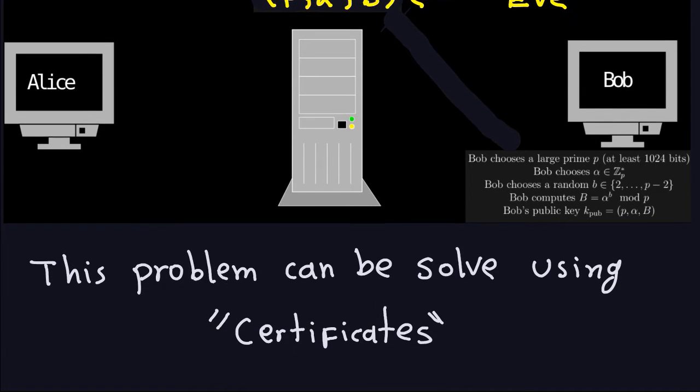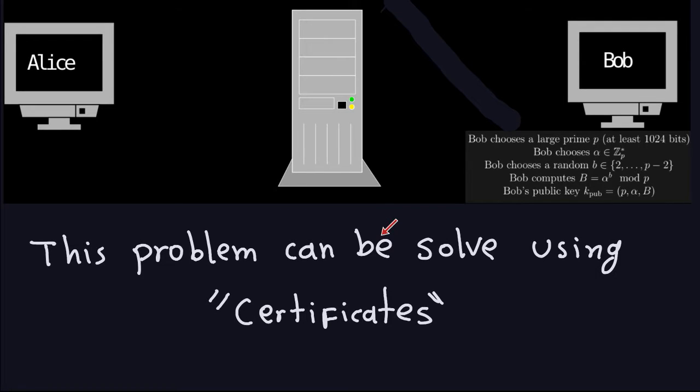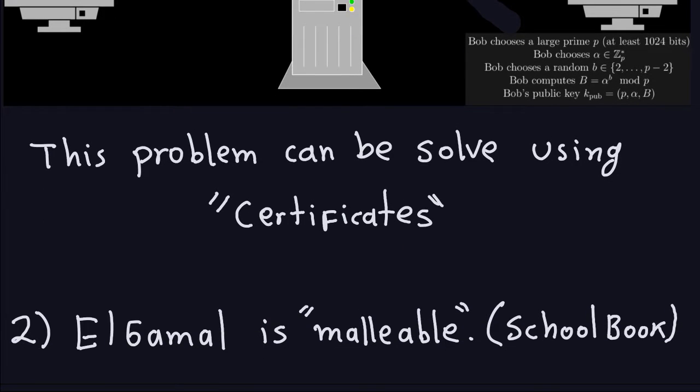Now that problem can be solved using something called certificates, and we might talk about this in the class later. This is basically to avoid this kind of impersonation. Of course security here means giving better security for this. It doesn't mean that certificates will always be 100% secure. It just adds another level of security to the ElGamal and other techniques.